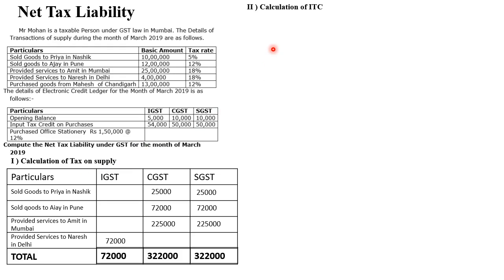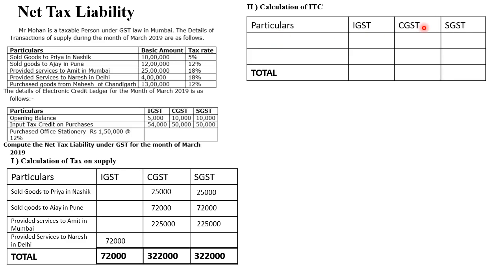Next, Step 2 is to calculate ITC — Input Tax Credit on purchases. Whenever you purchase goods, whatever tax you have paid you can set it off against tax on supply. The format remains the same: Particulars, IGST, CGST, SGST. First purchase — goods from Mahesh of Chandigarh. Chandigarh and Mumbai are different states, so the entire tax comes under IGST: 13 lakhs at 12% = 1,56,000.